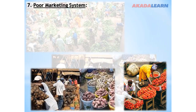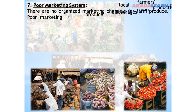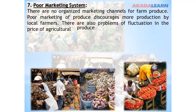Problem number seven: Poor marketing system. There are no organized marketing channels for farm produce. Poor marketing of produce discourages more production by local farmers. There are also problems of fluctuation in the price of agricultural produce.